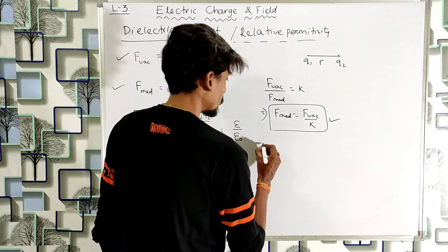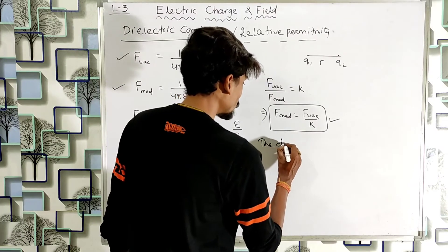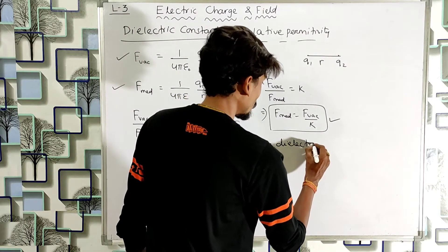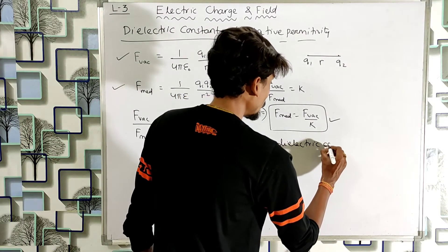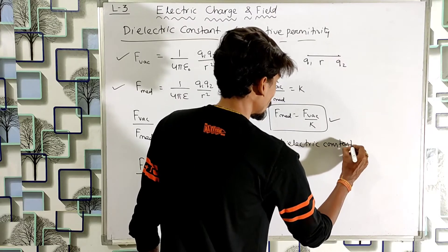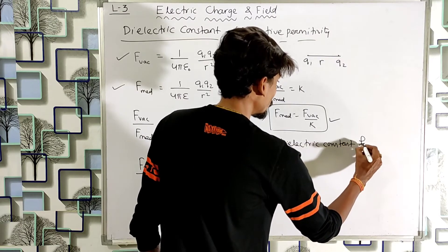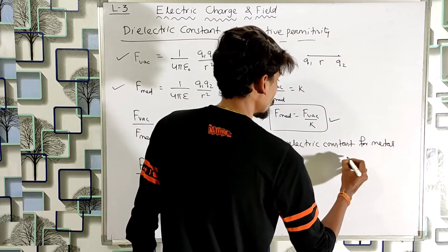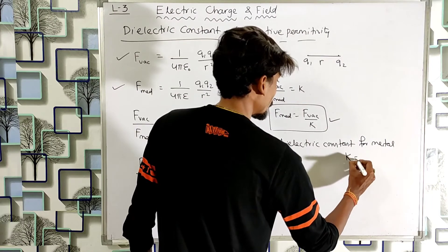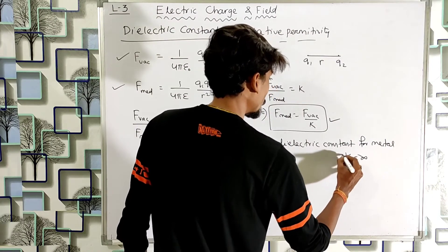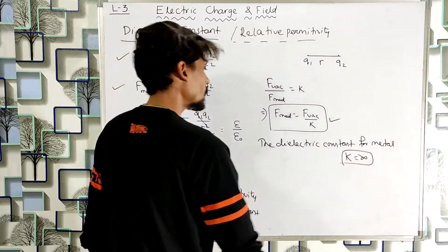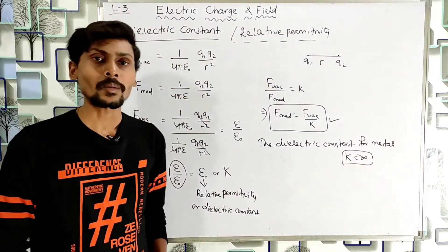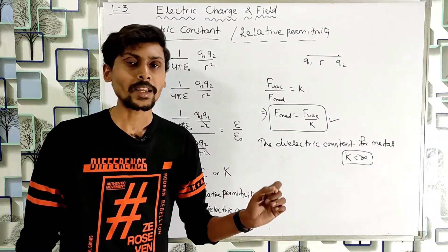The dielectric constant for metals is infinite. For vacuum, K = 1, since εnaught/εnaught = 1. For any other medium except metals and vacuum, the value of K lies between 1 and infinity.